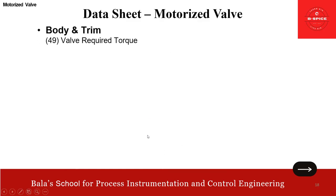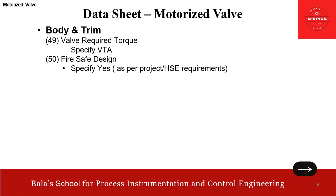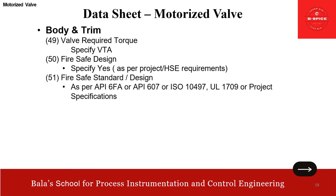Then same body and trim — a few more items. Valve required torque — this has to come from the vendor. Fail safe design: the fail safe requirement should be in compliance with the project HSE requirements. The standards adopted for fail safe are API 6FA, API 607, ISO 10497, or UL1709. Above all, the project specification takes precedence. Here regarding fireproofing requirement — when the valves themselves are fail safe by nature, meaning all metal design, they are designed to reduce the fire risk, so we don't necessarily need to fireproof them.